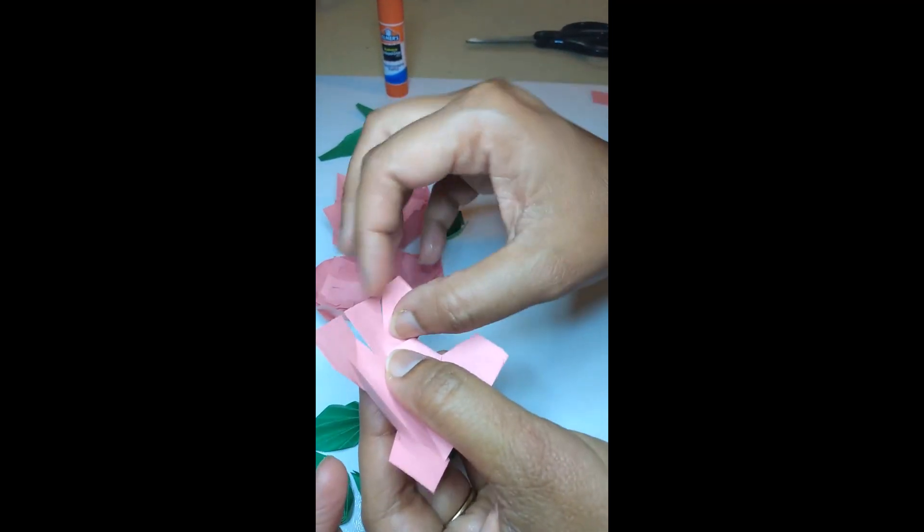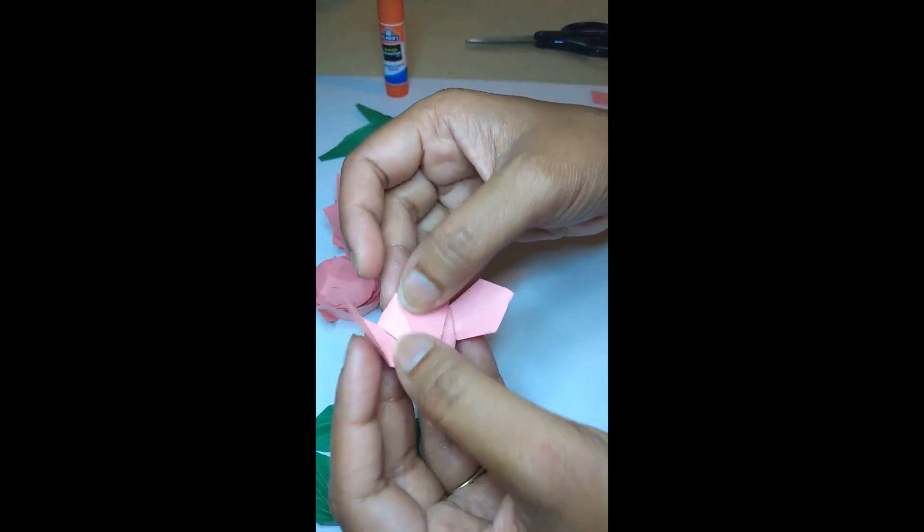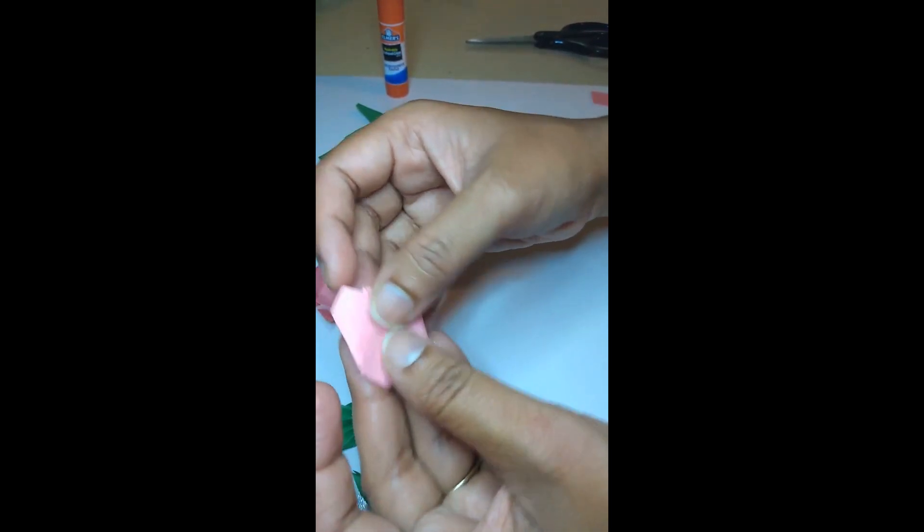Now fold the cutting edges. Now it gets into a petal shape. Now fold it on all the sides.